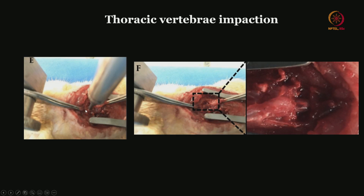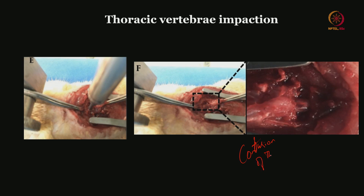In this zoomed-in view, you fixate the spinal process using rigid fixators — a forceps holding the spinous process on both sides. These are the retractor blades holding the skin and muscle tissue, which are self-retaining. The tip of the impactor is closer to the cord after you expose the cord. On the right-hand side you can see the spinal cord exposed with the dura visible. After the impaction by the impactor, the tip has moved and caused an impact — the bluish discoloration is the contusion.